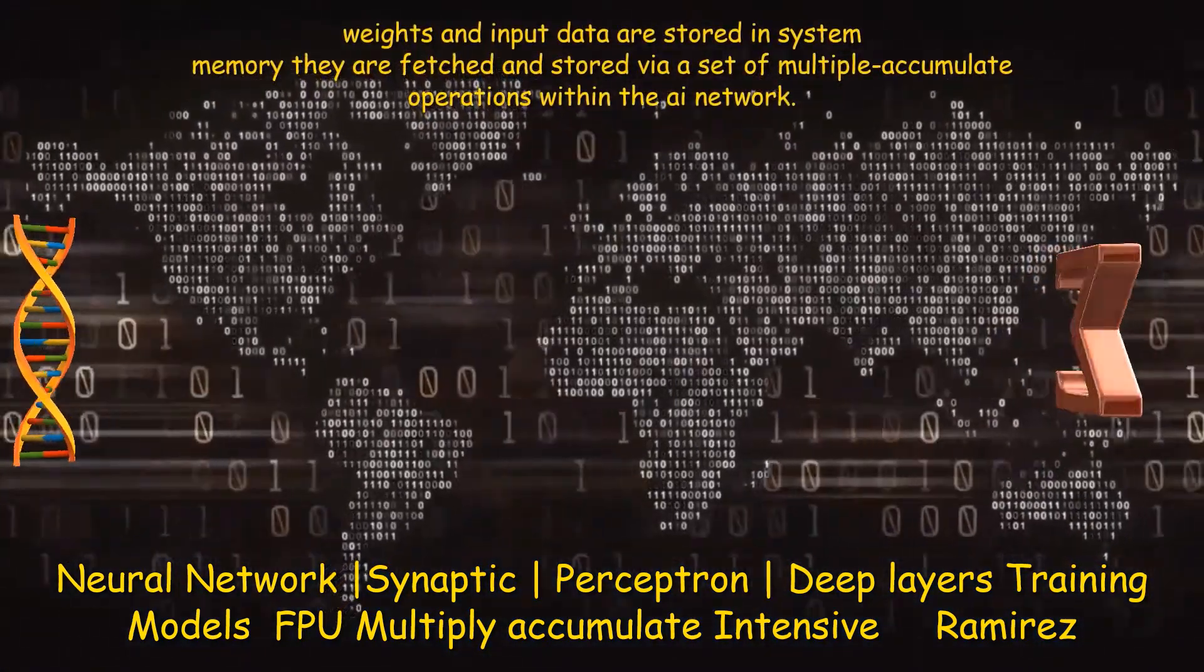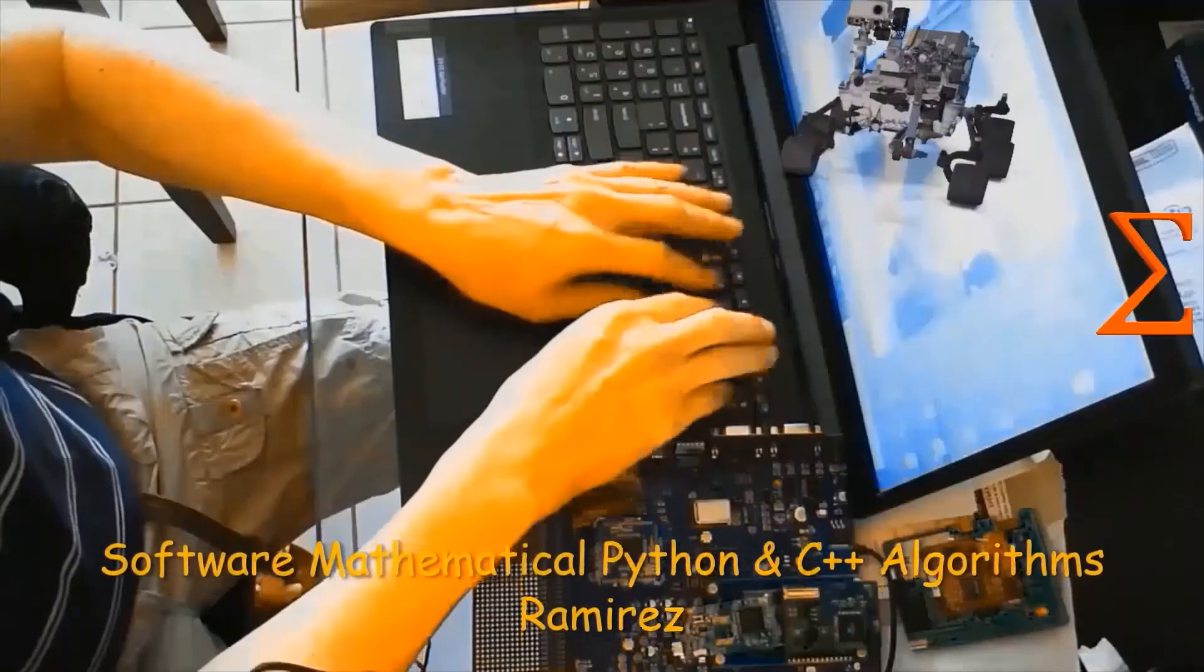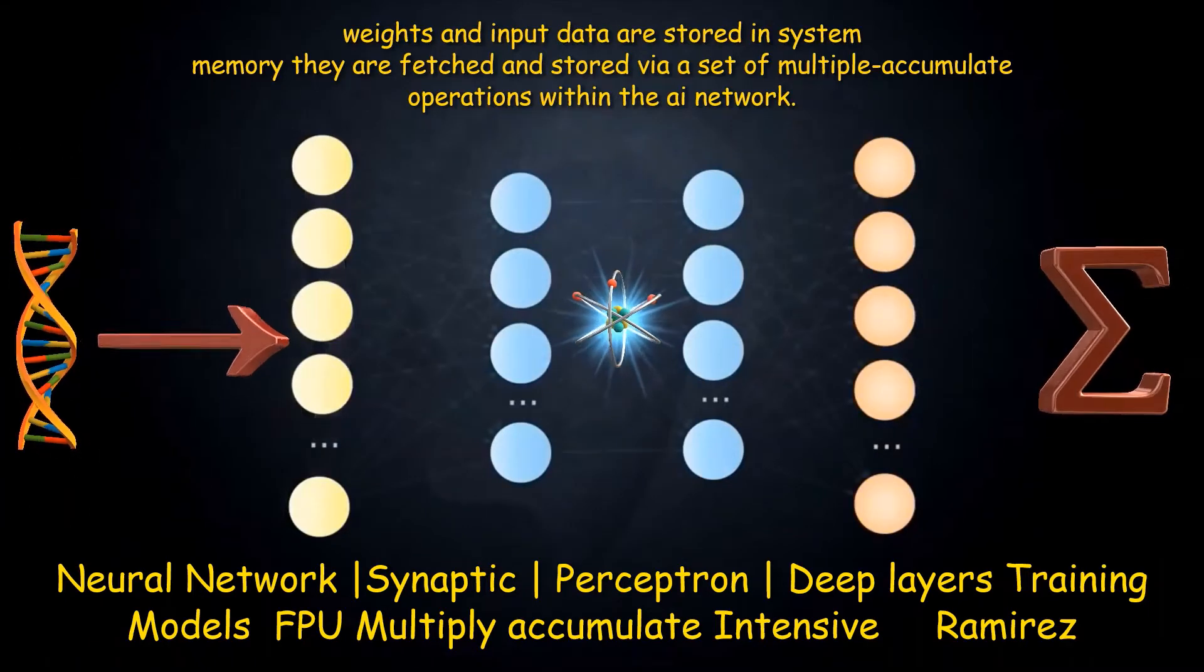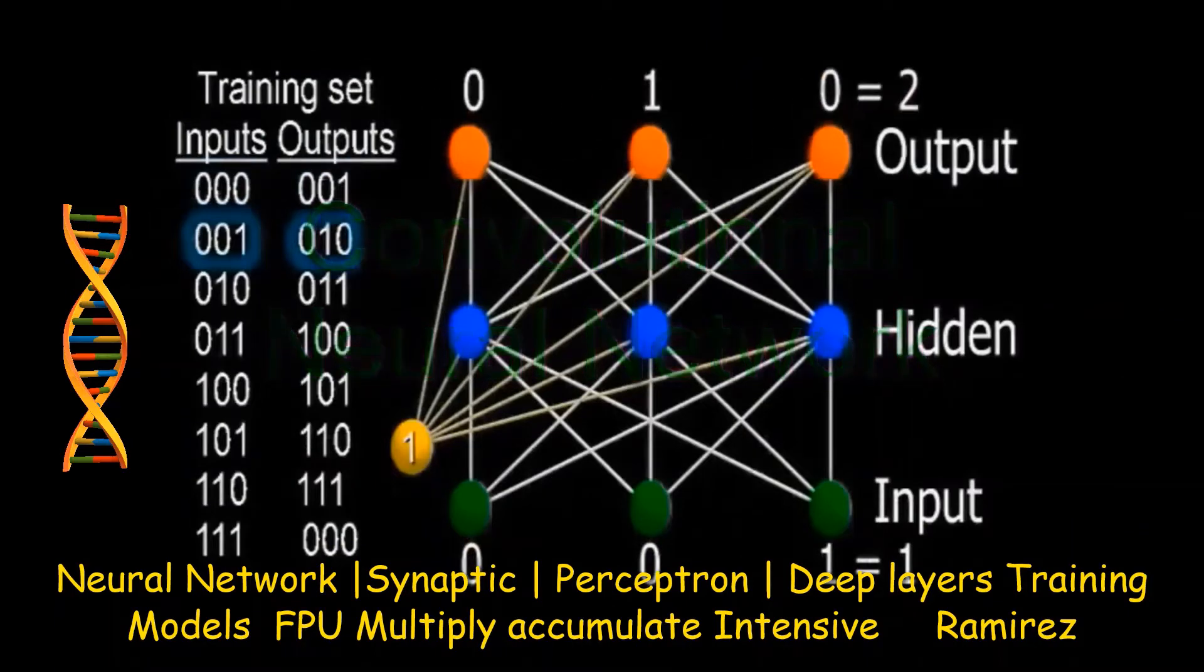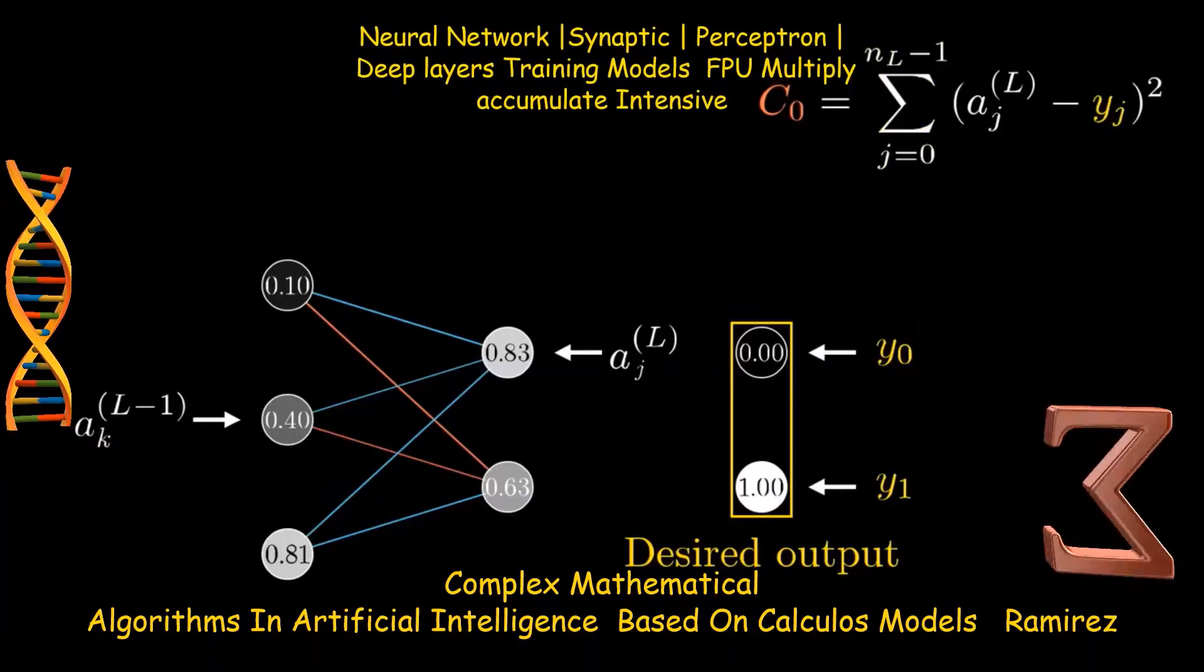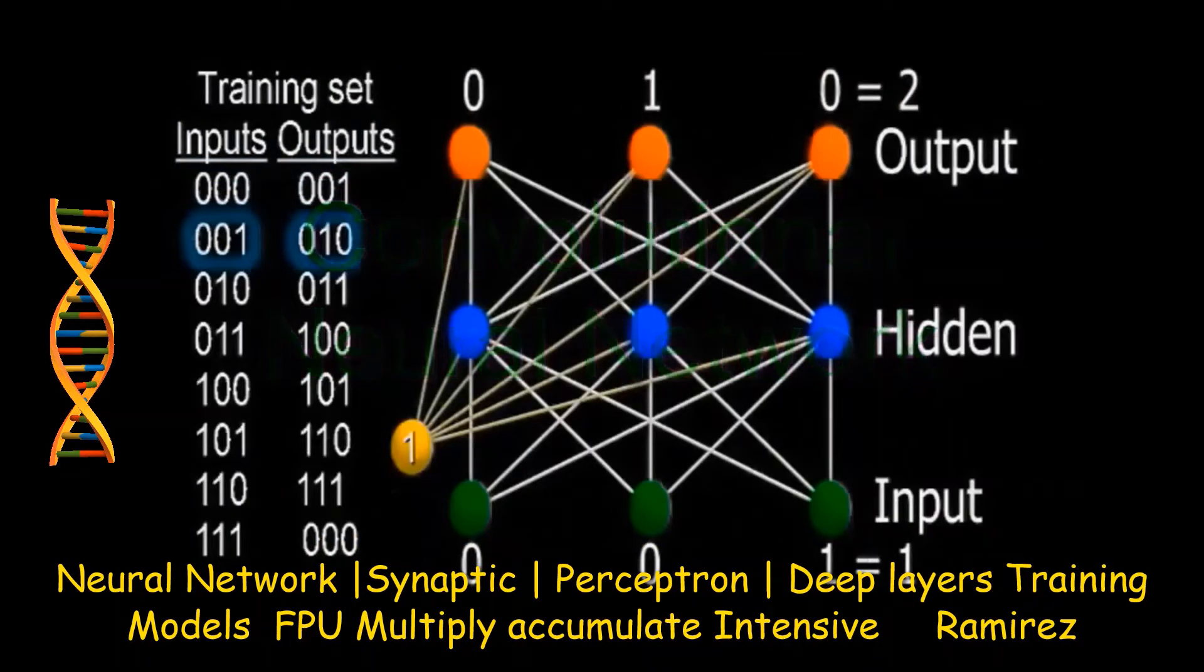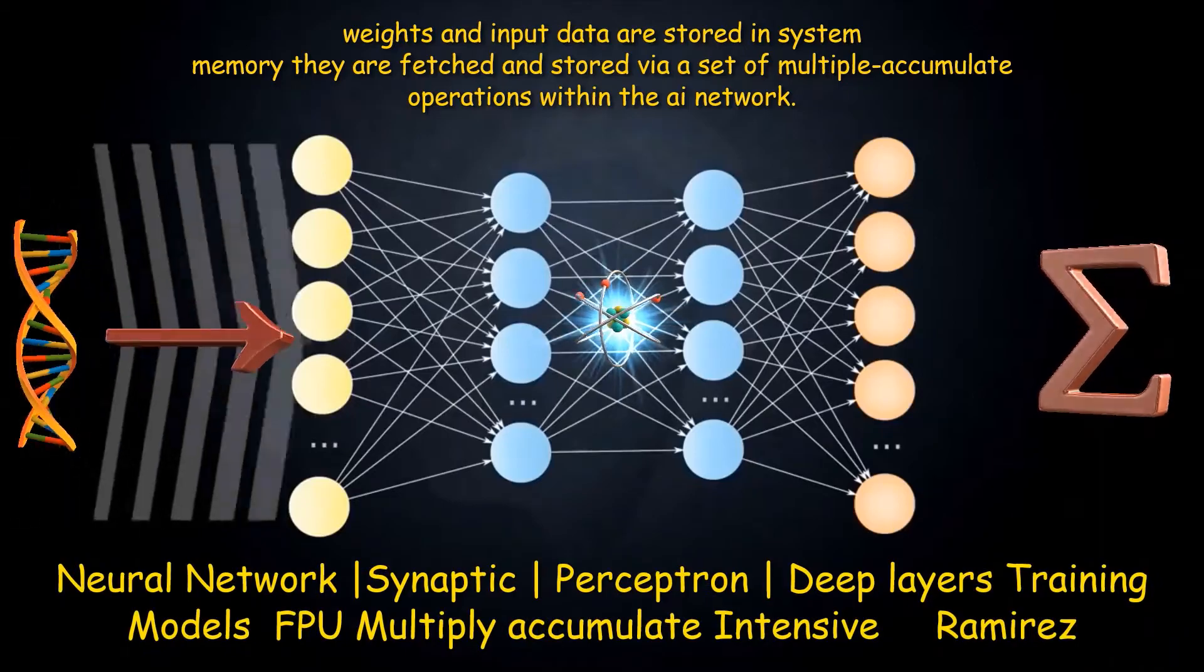The artificial intelligence neural network implementation: the weights and input data are stored in system memory and must be fetched and stored continuously through a series of multiple accumulate operations within the AI network. The ability to process 3D graphics requires several arithmetic logic units coupled to high-speed memory interfaces. This is inherently made far more efficient and faster for machine learning by allowing hundreds of multiple accumulate operations to process simultaneously.